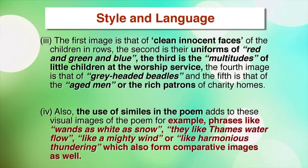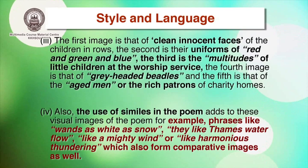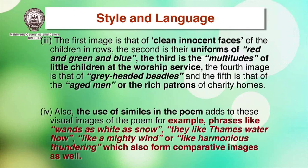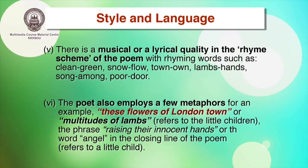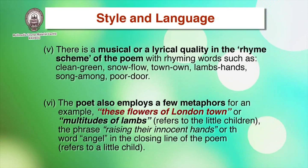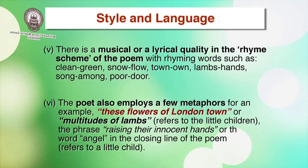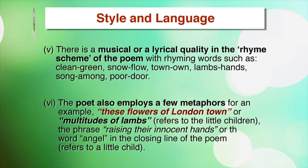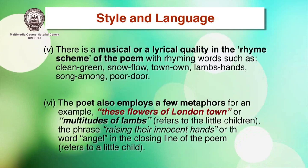Also, 'like harmonious thundering' — where harmony and thundering are two contrasting things coming together — is another simile. The moment you use words like 'as' or 'like,' these form similes, which are comparative images. You will also notice there is a musical or lyrical quality in the rhyme scheme of the poem, with rhyming words such as: clean/green, slow/flow, town/own, lamps/hands, song/amount, poor/door. These rhyming words maintain a musical quality throughout the poem.